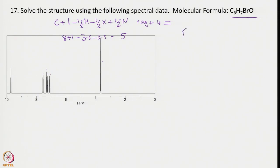Let us now try to write the structure. I would first write a benzene ring with one bromo group. For a para-substituted compound, due to free rotation about the C2 axis, only 4 different types of proton signals would be expected — but we observe 6 groups, so para substitution is ruled out.